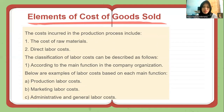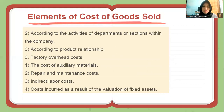The elements of cost of goods sold include the costs incurred in the production process: raw material costs and direct labor costs. The classification of labor costs is as follows. First, according to the main function in the company organization: production labor cost, marketing labor cost, and administrative and general labor cost. Second, according to the activities of departments or sections within the company.